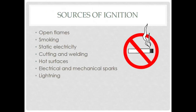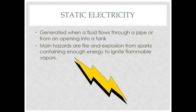Sources of ignition for flammable liquids include smoking, static charge, open flames, cutting, welding, grinding, hot surfaces, electrical or mechanical sparks, and lightning. A very significant ignition source is static electricity, which we will cover in a separate video. Static electricity is generated when a fluid flows through a pipe or from an opening into a tank. The main hazards are fire and explosion from sparks containing enough energy to ignite flammable vapors.